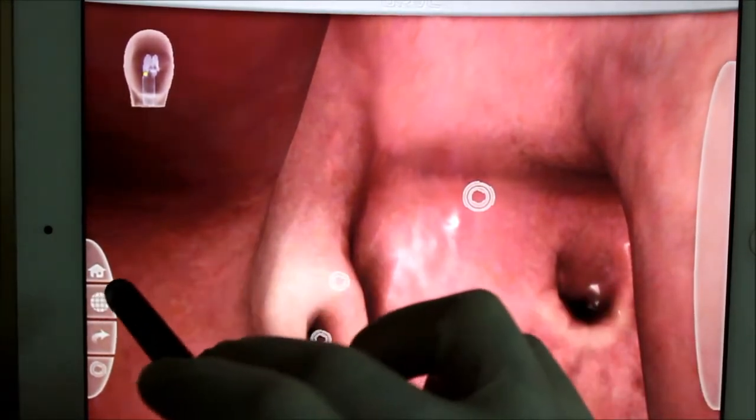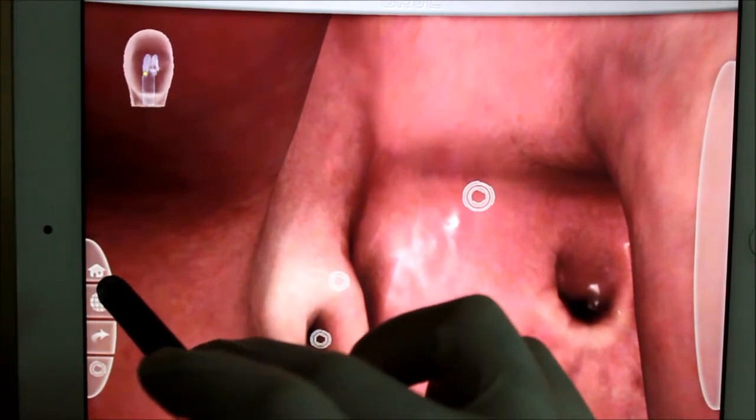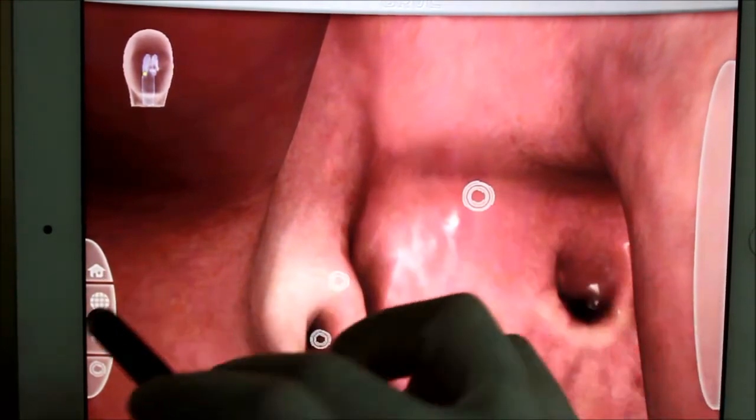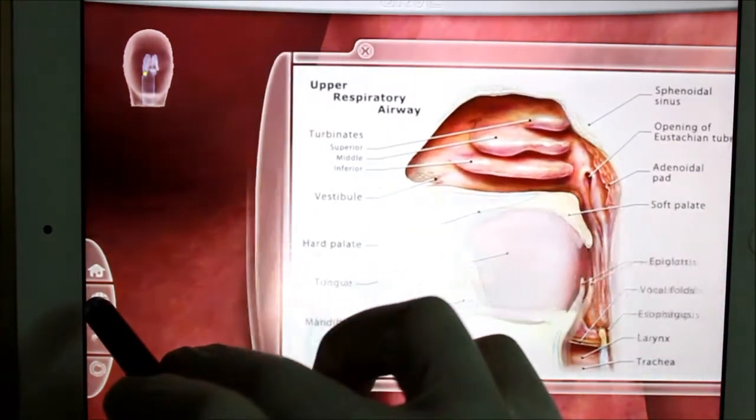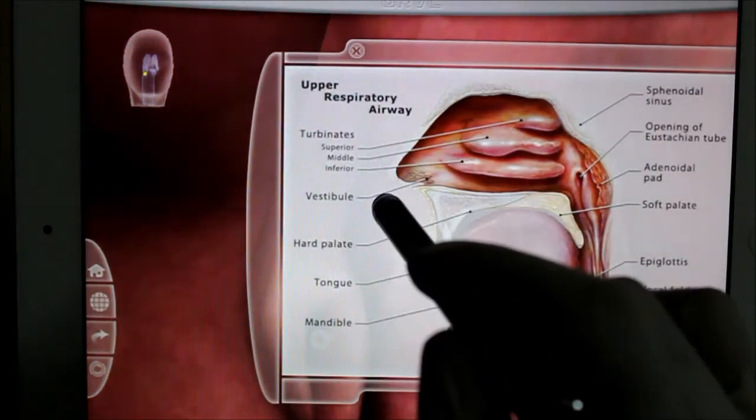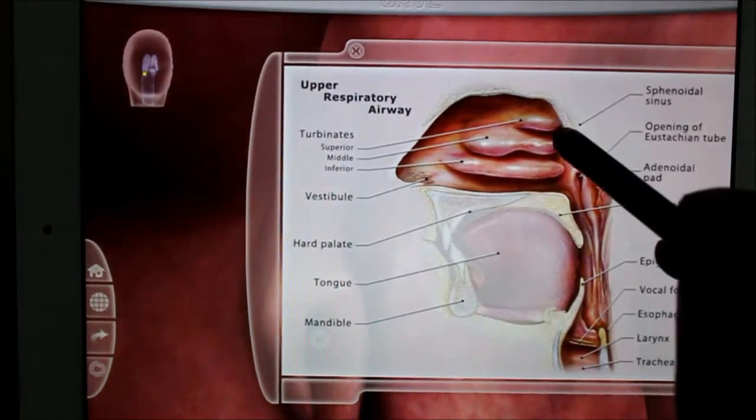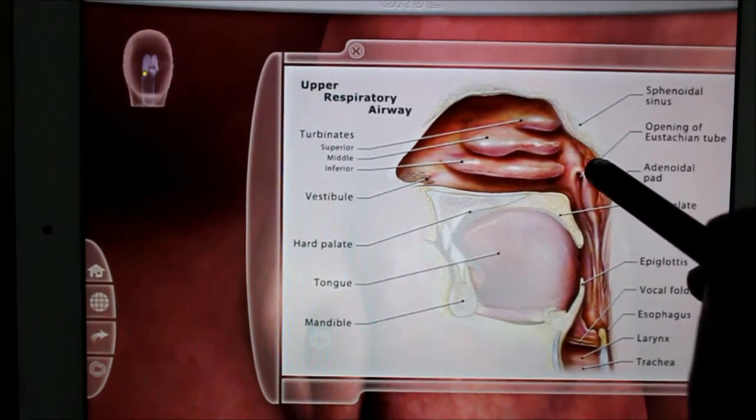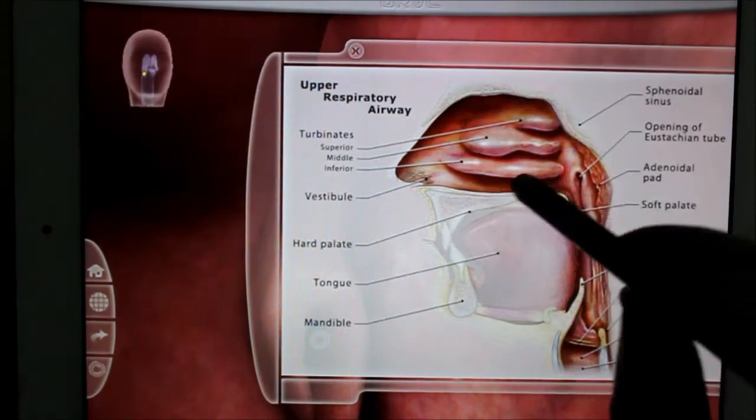nasopharynx, then oropharynx below, then below it we have laryngopharynx. Just to emphasize this point again, here we have the posterior choana because it is the entry to the nasopharynx.